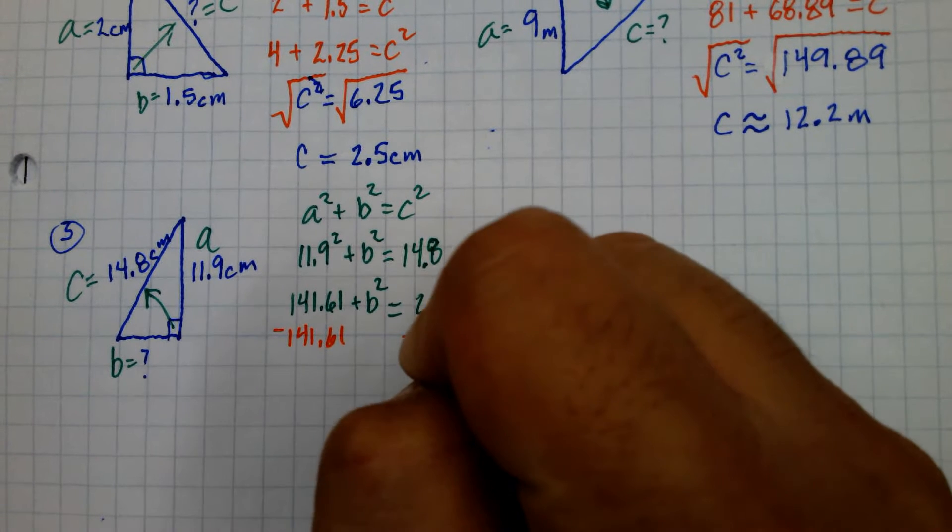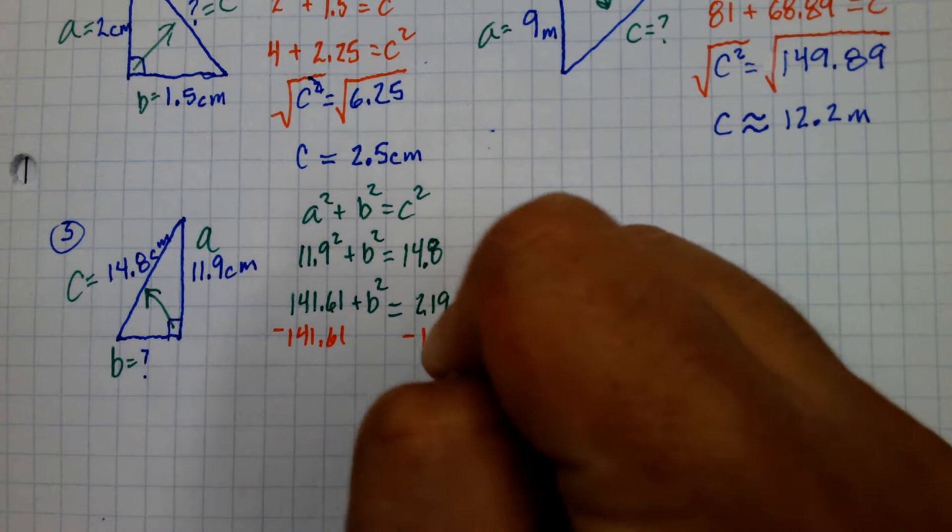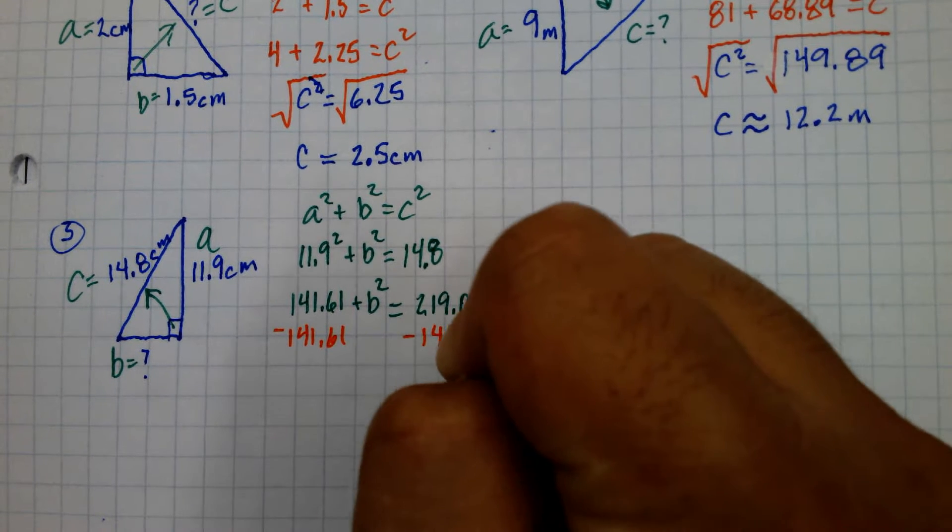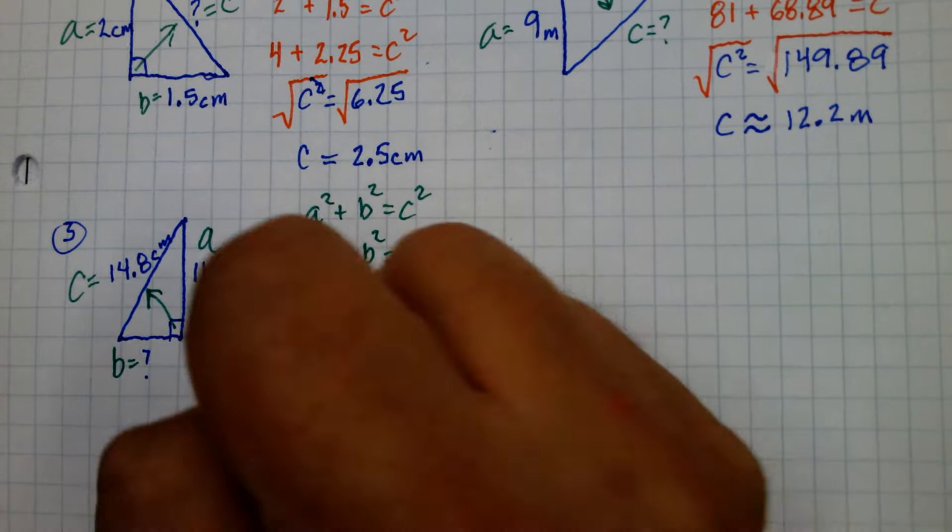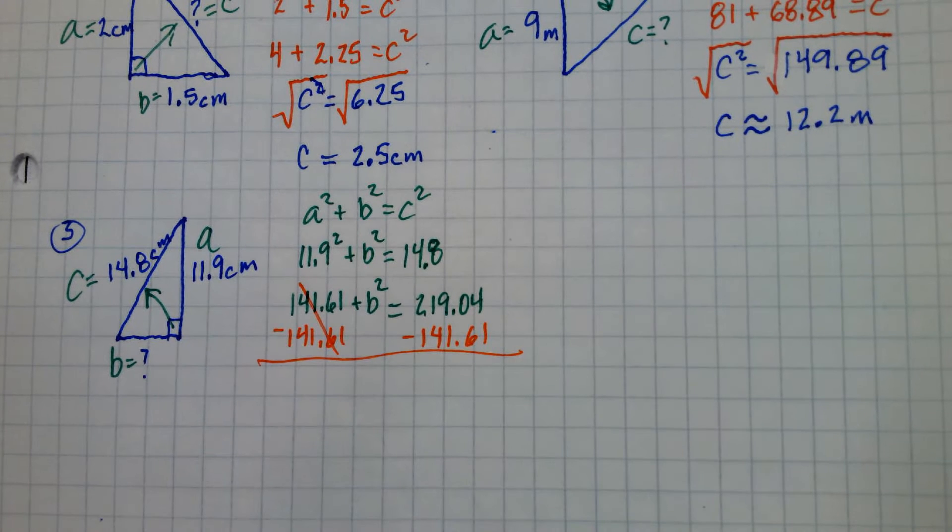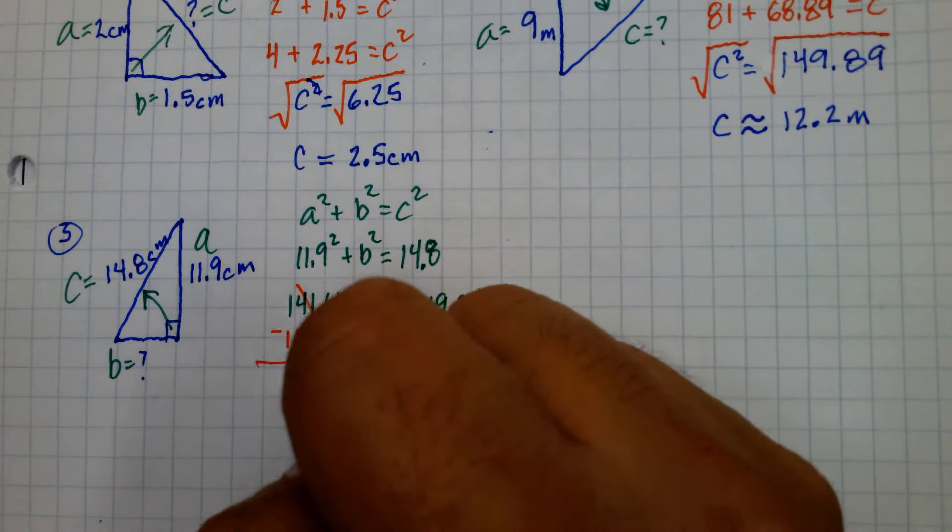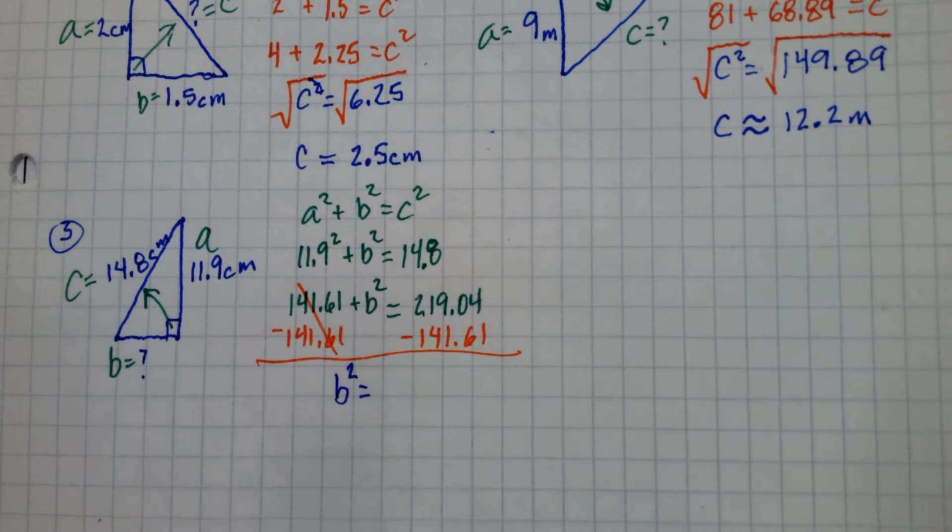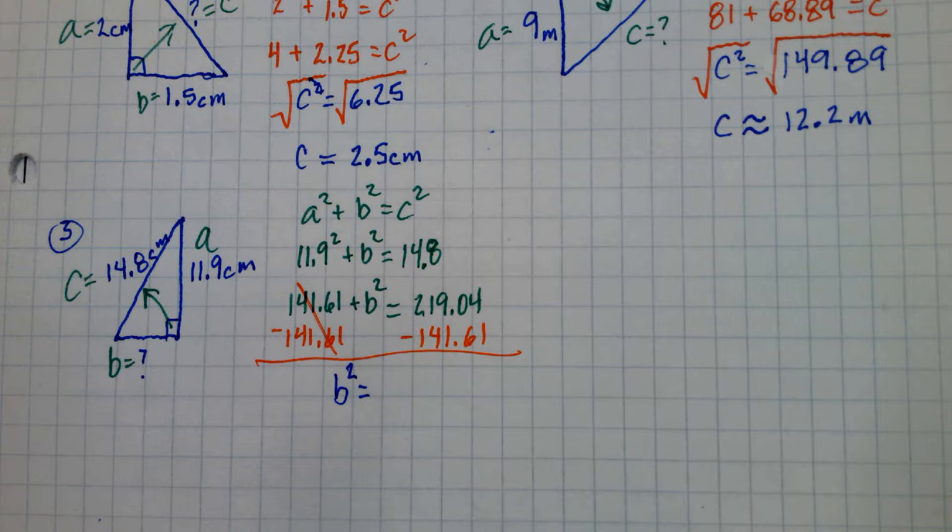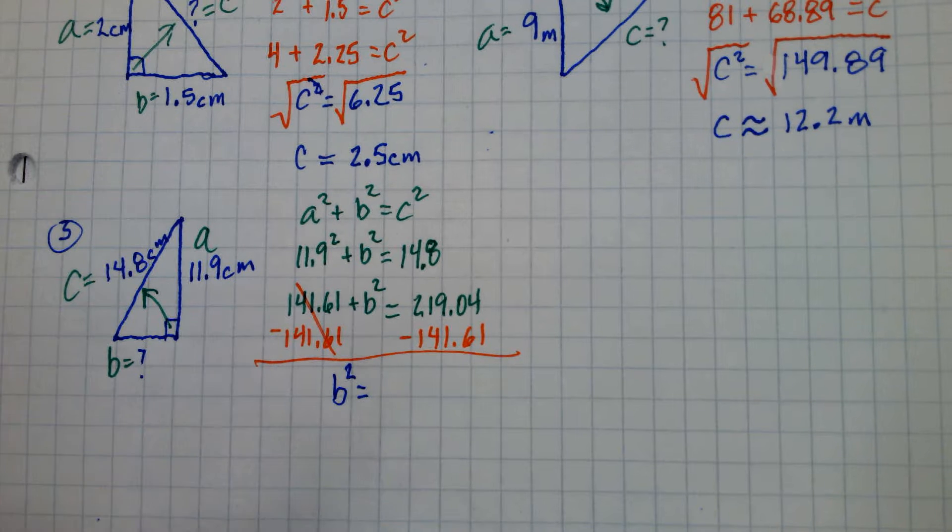And now what do we have to do here? So just some real basic calculations. And now we're going to end up with B squared equals 219.04 take away 141.61 and what do we get? I got 77.43. Is that what you get?